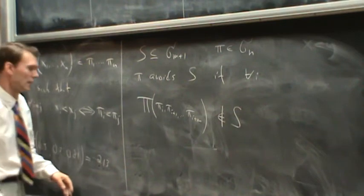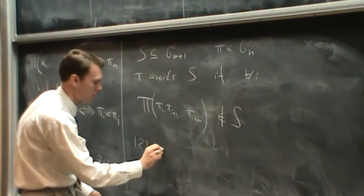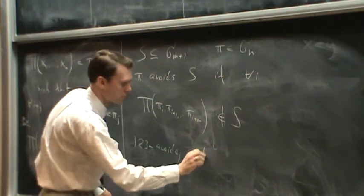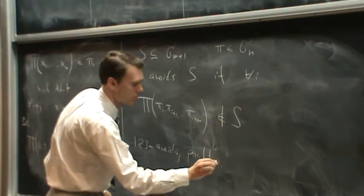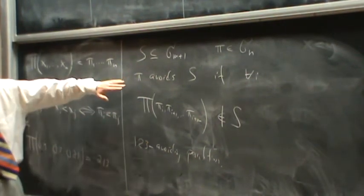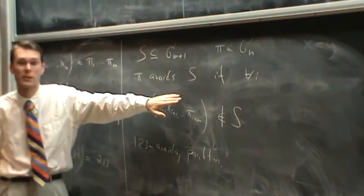So, pi avoids s if each window of length n plus 1 is not in the set s. The case we did here was 1, 2, 3 avoiding permutations.